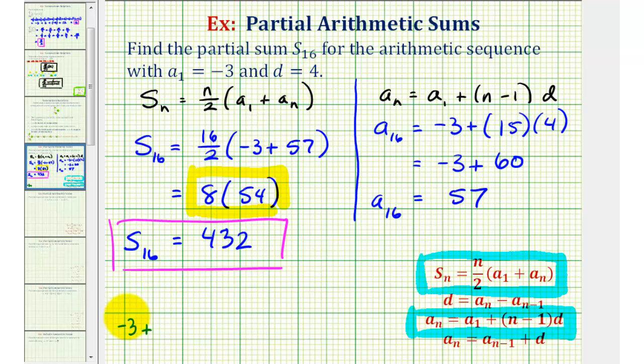then we'd add four to negative three, so that'd be one. Plus, add four again, that'd be five. Plus nine. Plus, all the way out to, we know the 16th term is 57.